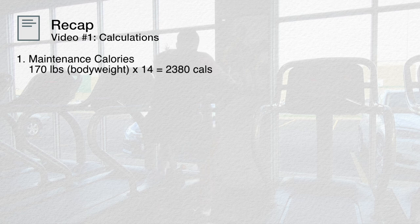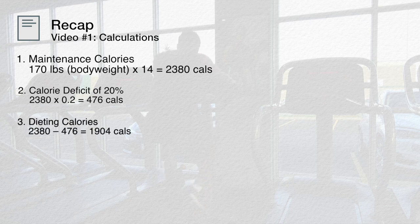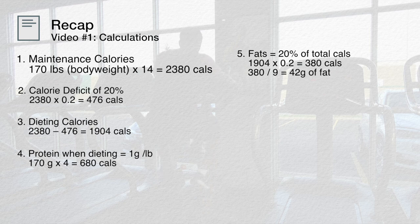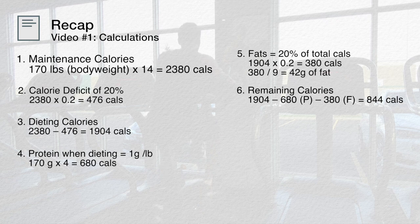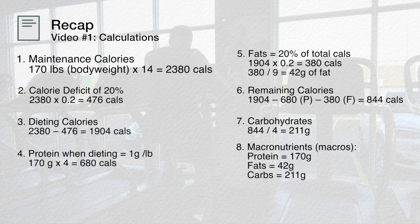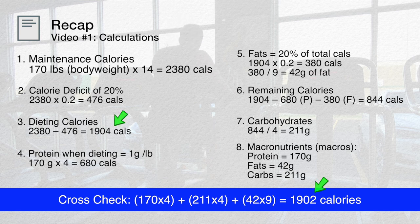Let's quickly recap these calculations. First, we established maintenance calories by multiplying total body weight by 14. We then decided on a deficit percentage and subtracted that from the total calories. Once we calculated our dieting calories, we established protein intake at around 1 gram per pound of body weight, then calculated dietary fat based on a percentage of total calories, and used the remaining calories for carbohydrates. To cross-check these numbers, multiply your protein and carbs by 4 and your dietary fats by 9, add them together, and the total should closely match your calculated dieting calories.